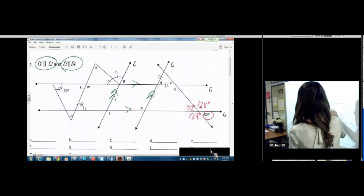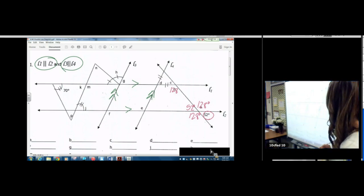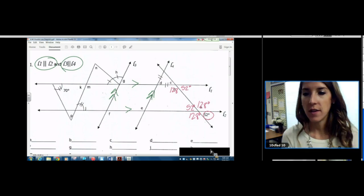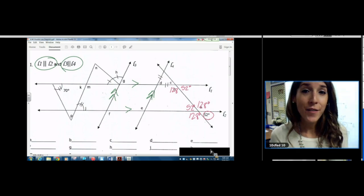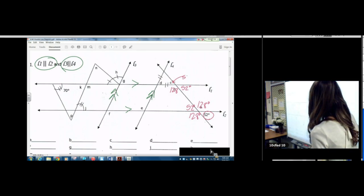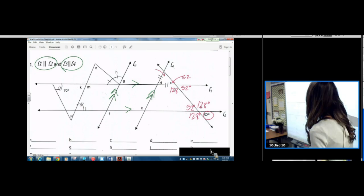52. Alternate interior angles. 52. Now I have vertical angles. Look at that. C is 52 right here. And remember what we talked about in class. If we have an isosceles triangle, the angles across from those tick marks are congruent.